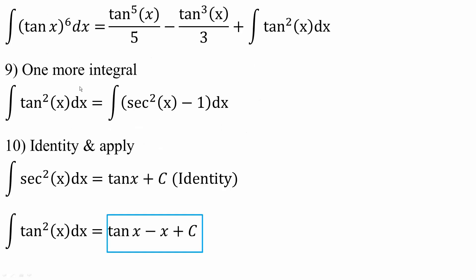Now we need to do one more integral. We know that the integral of tan squared x dx is equal to the integral of secant squared x minus one dx, because tan squared x equals secant squared x minus one. The integral of secant squared x is simply tan x — this is an identity. And the integral of negative one gives us negative x. So the integral of tan squared x dx equals tan x minus x plus c.